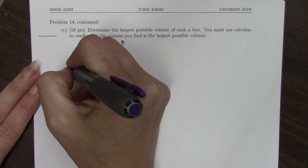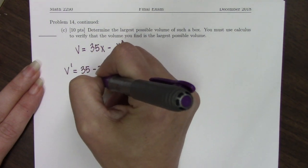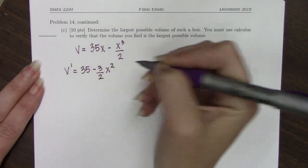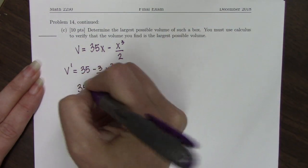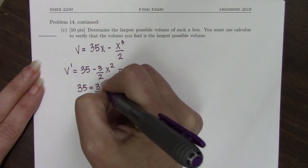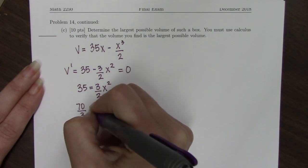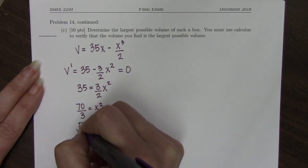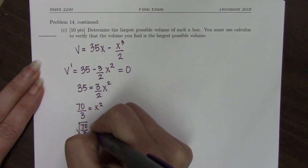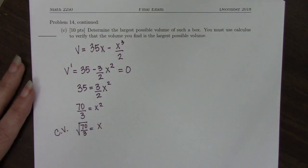Now I need to get my critical values. So I do that by taking the derivative. And then we're going to set this equal to 0. So 35 will equal 3/2 x². 70/3 will equal x². So the square root of 70/3 will equal x. So this is my critical value. It is in the domain that I found on the previous page.